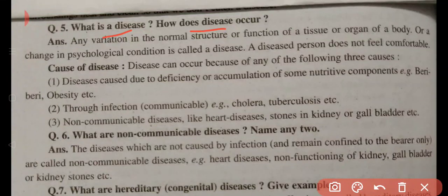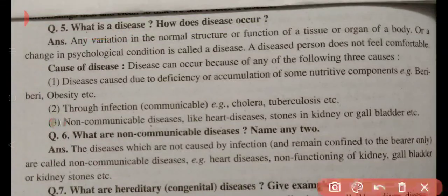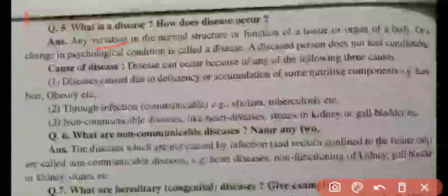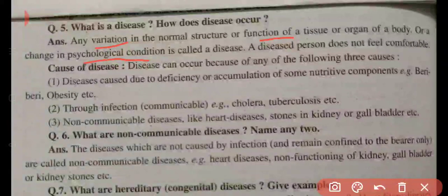What is a disease? Any variation in the normal structure or function of a tissue or organ of a body is known as disease. We can also say a change in physiological condition is called a disease. A diseased person does not feel comfortable.